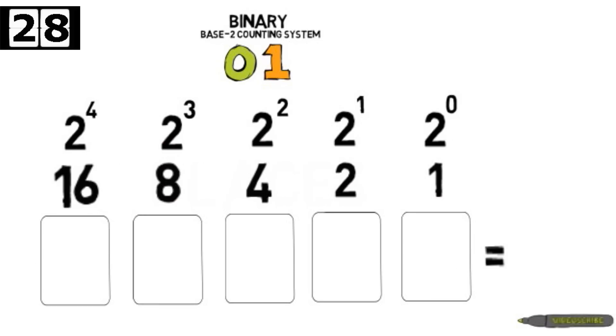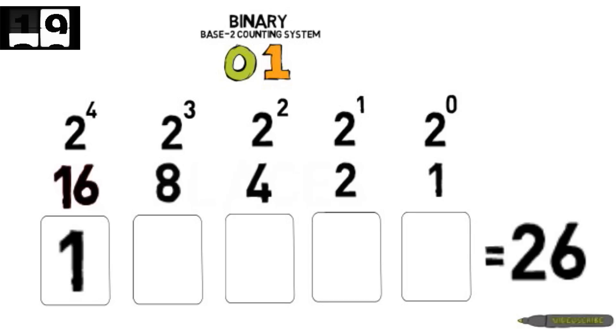Okay, let's say we want to convert 26 into binary. Starting with our biggest number, 16, we ask how many times will 16 go into 26? It's 1, remainder 10.